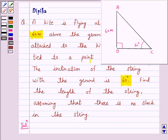Now, according to our question, the inclination of string with the ground is 60 degrees.